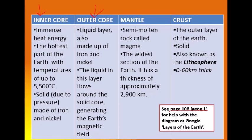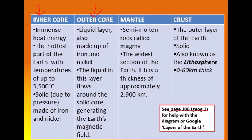Next we have the outer core. This is actually a liquid layer — it flows and is also made up of iron and nickel. Because it's a liquid, it flows and moves around the solid inner core. This actually generates Earth's magnetic field — that's why we have a magnetic field on our planet. It's generated by this movement in the outer core.